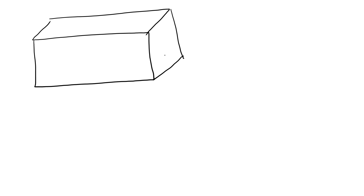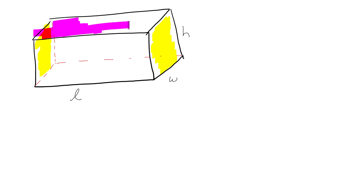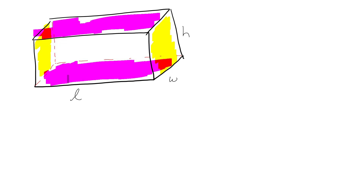You probably have to commit that one to memory — even if you can derive it, it's just easier to memorize it. Everything else is actually easier to derive than to memorize. So if we're looking at a rectangular prism, it's going to have a length, a width, and a height. If we're going to calculate the surface area, we have this shape here with something going in the back.